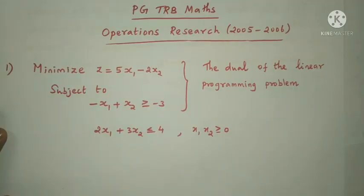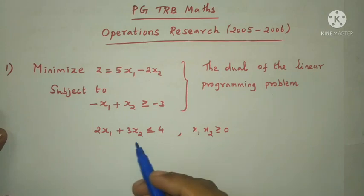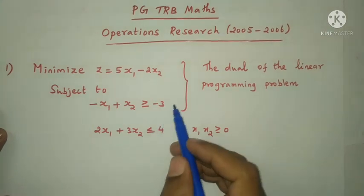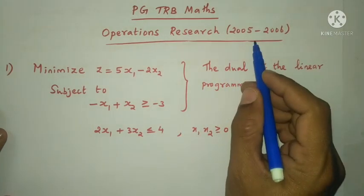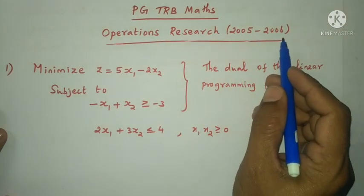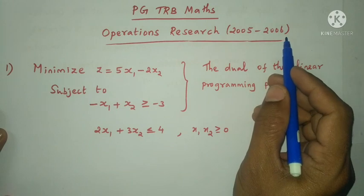P.G.T.R.B. Mass Operations Research, 2005-2006, Allocator Problems and Arthnode Solutions.